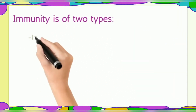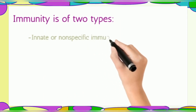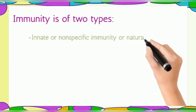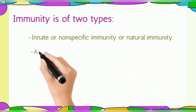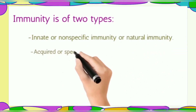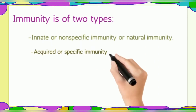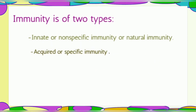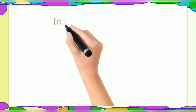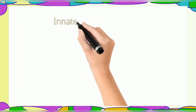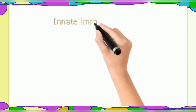Immunity is of two types: first, Innate or Non-Specific Immunity, also called Natural Immunity; and second, Acquired or Specific Immunity. In this lecture class, let's see a little bit about Innate Immunity.